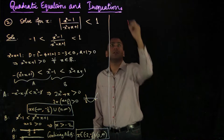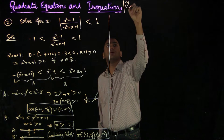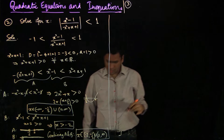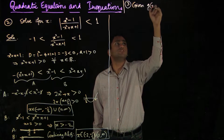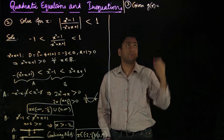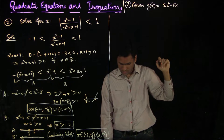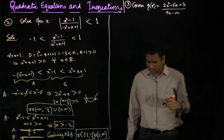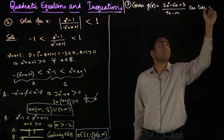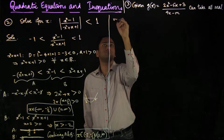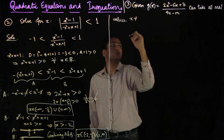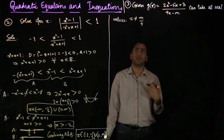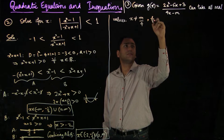We will now do another solved example to further learn about rational functions. Given g of x equals 2x squared minus 5x plus 3 over 4x minus m, we can take all real values of x except x equal to m over 4, because if x equals m over 4 then the denominator is 0 and you would not have a well-defined rational function. We need to find the values of m such that g of x can take all real values.